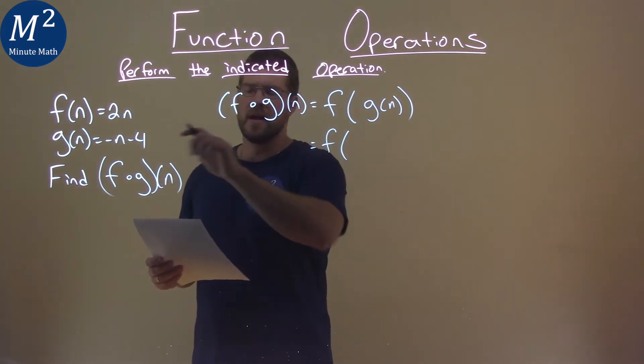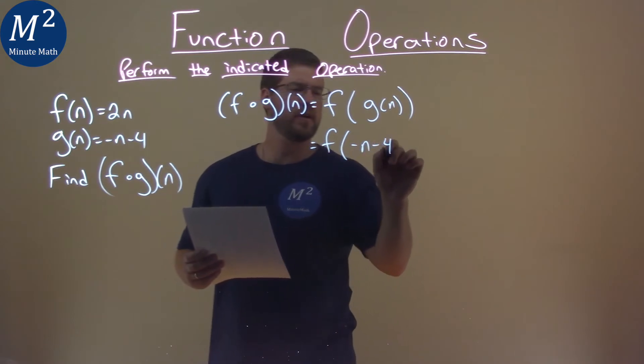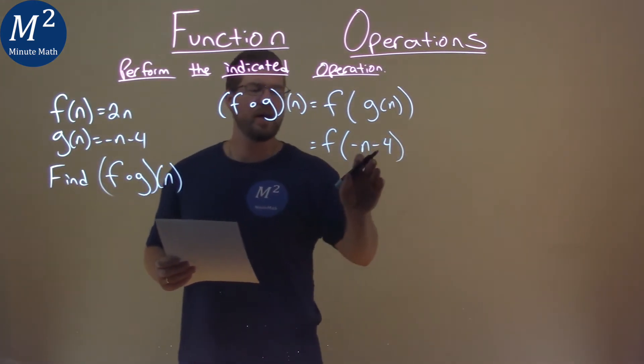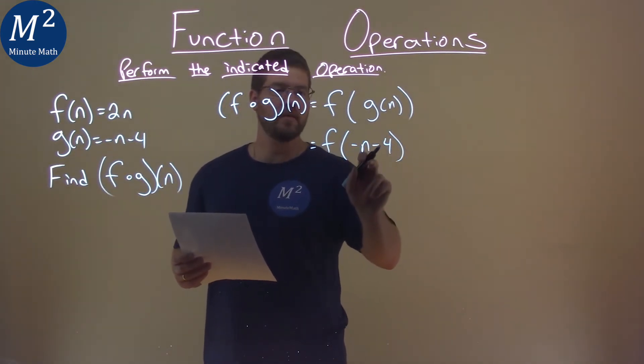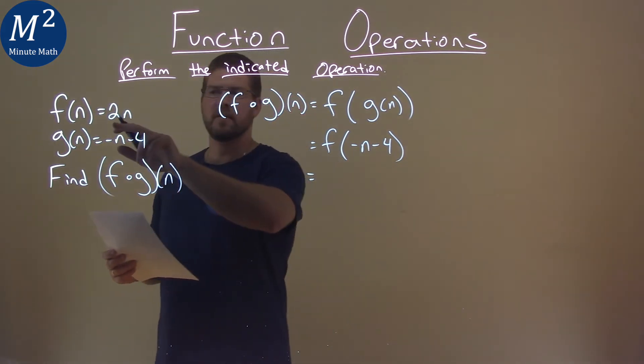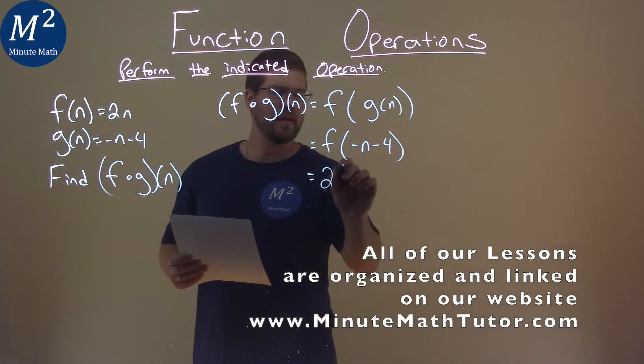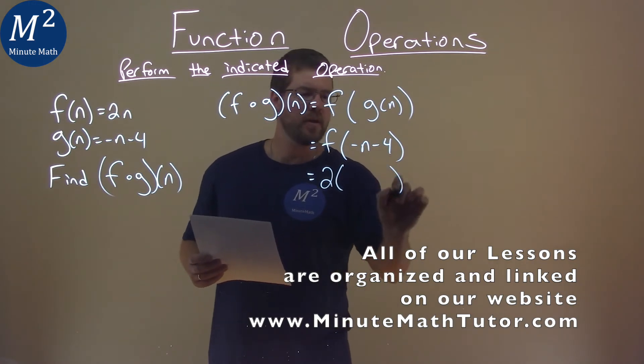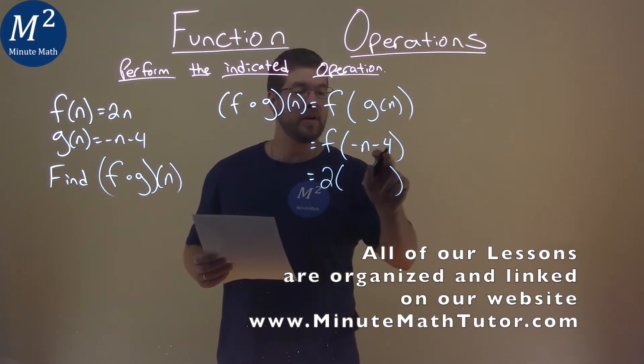So g of n is negative n minus 4 here. That's the whole function of g of n. What is f of n? Well, f of n is 2n, 2 times our n value. And what we're plugging in for n is right here, negative n minus 4.